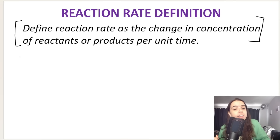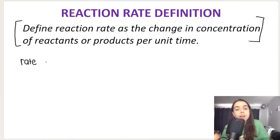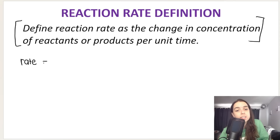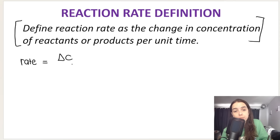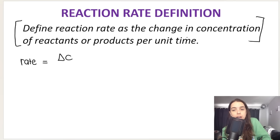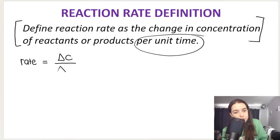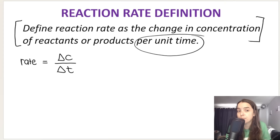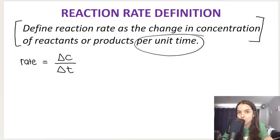If I ask you to calculate the average rate of reaction — they can say average rate or rate of reaction — according to the definition, rate is calculated as the change in concentration of reactants or products per unit time. Per means divide, so we are dividing by time. That is essentially how we calculate rates.